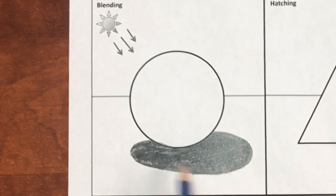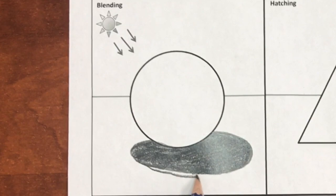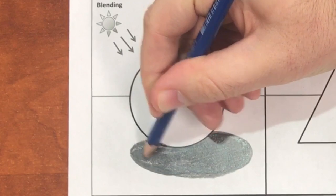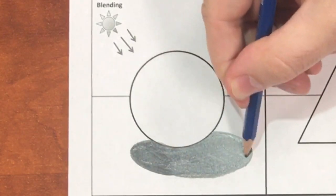For the first form, I'm going to be applying blending in order to turn the circle into a sphere. I'm going to begin by working in the darkest areas first, including the cast shadow and the core shadow.